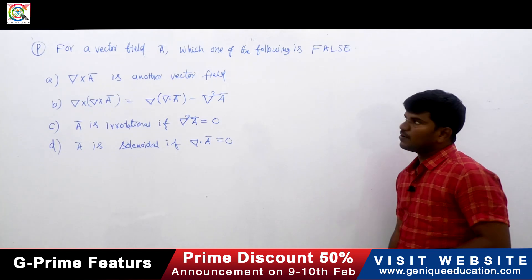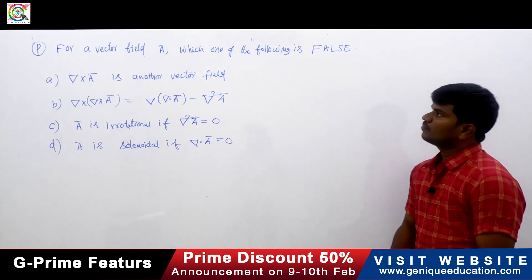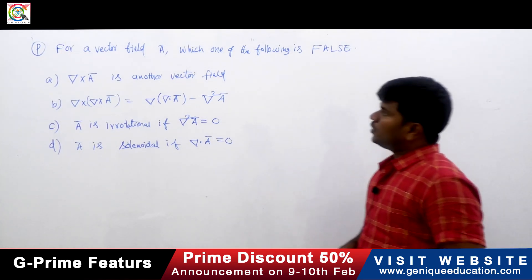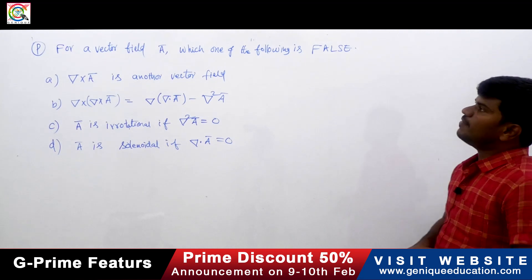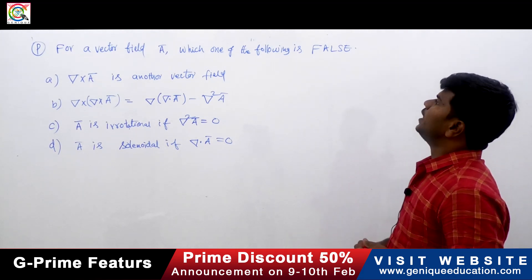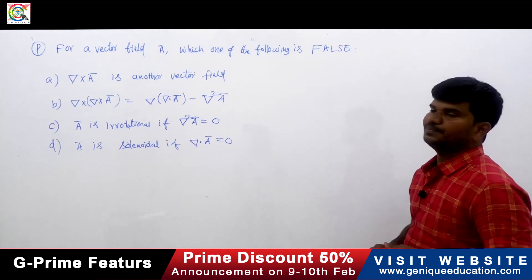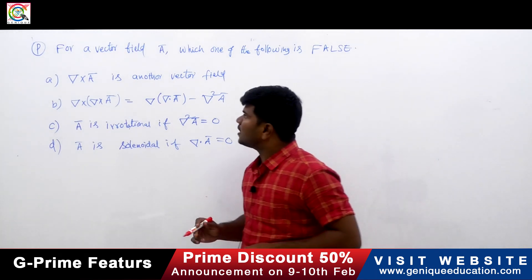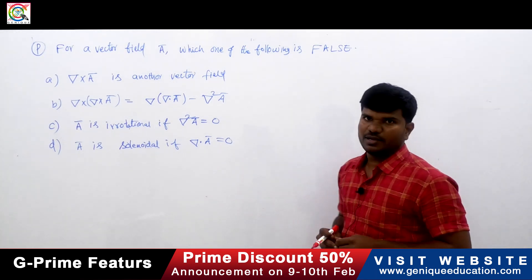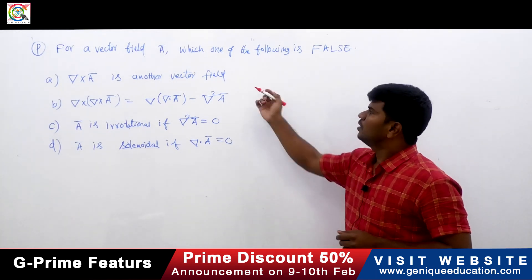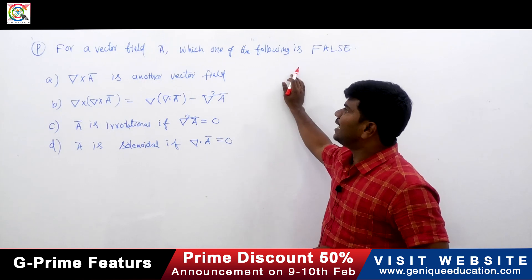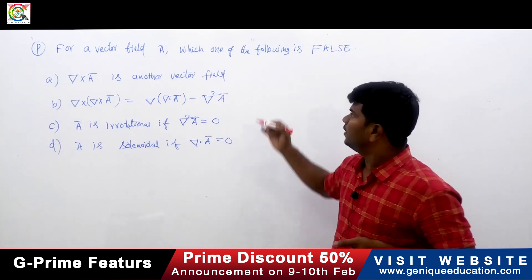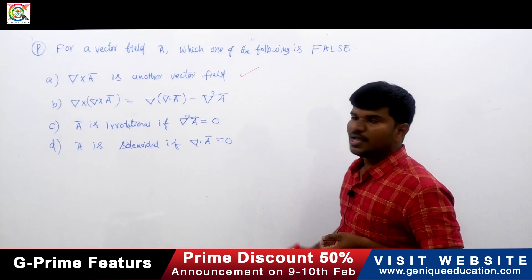This is a basic electromagnetics question. For a vector field ā, which one of the following is false? The first option is: del cross ā is another vector field. The del cross of any vector will be another vector, so this is correct.